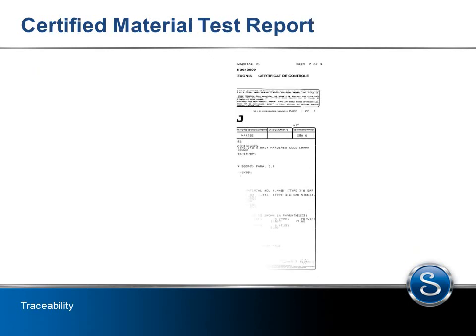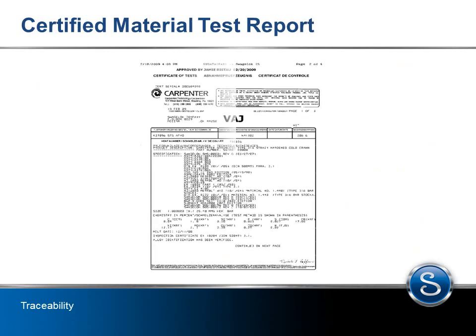A Certified Material Test Report, or CMTR, from the manufacturer of the raw material provides heat code and traceability. The CMTR also shows results of testing for requirements outlined in the material specification, such as composition and mechanical properties.